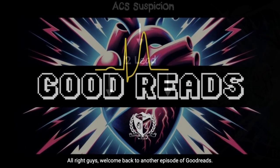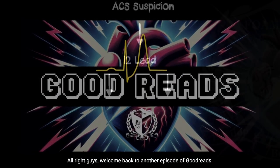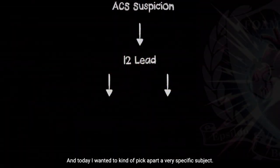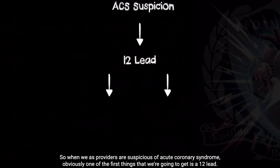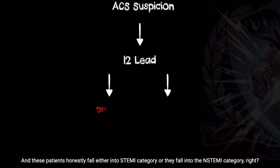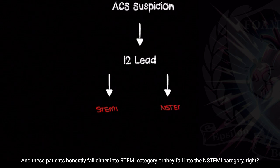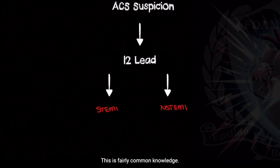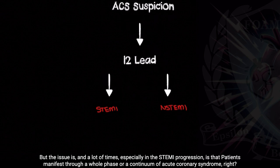Welcome back to another episode. Today I wanted to pick apart a very specific subject. When we as providers are suspicious of acute coronary syndrome, one of the first things we're going to get is a 12-lead, and these patients honestly fall either into the STEMI category or the NSTEMI category. This is fairly common knowledge.